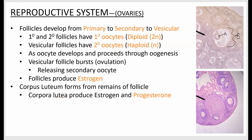In the ovaries, the follicles are not all the same. They start as primary follicles, grow larger, adding more cell layers to become secondary follicles, and eventually become large fluid-filled structures called vesicular follicles — also called graafian follicles. The cells inside called oocytes change depending on which follicle they're in. As they go through meiosis, they start off diploid and are called primary oocytes; once they complete meiotic division one, they become haploid and are called secondary oocytes.